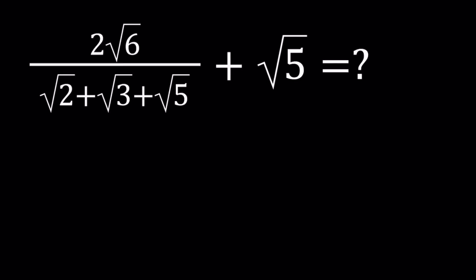Hello everyone. In this video, we're going to be simplifying a radical expression. We have 2 times the square root of 6 divided by square root of 2 plus the square root of 3 plus the square root of 5, plus the square root of 5.